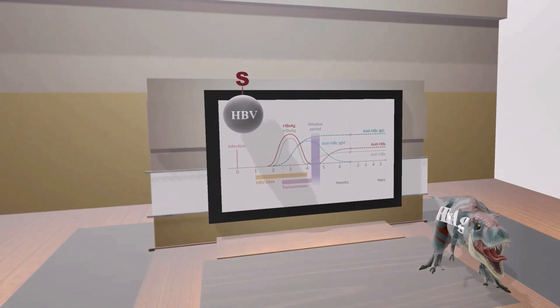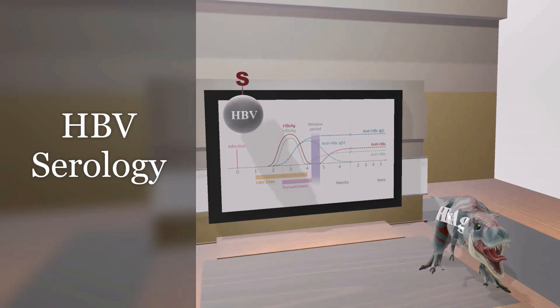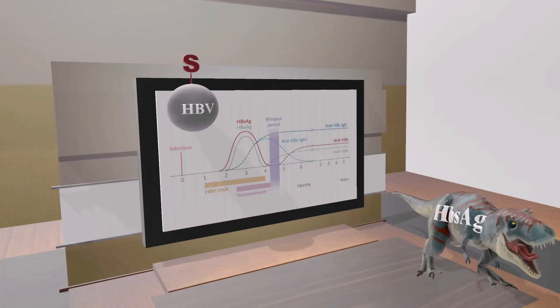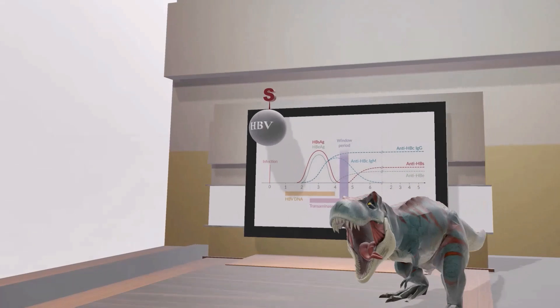In this scene we're going to talk about HBV serology and make it really easy. We'll begin by taking a look at the structure of HBV, then talk about the serology graph, and then talk about why there is a dinosaur in the classroom. So let's begin — here we have our HBV virus, let's take a closer look at it.